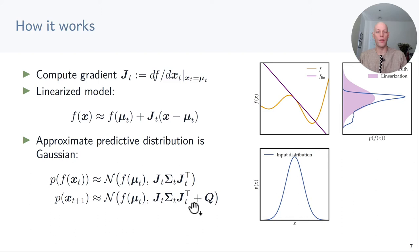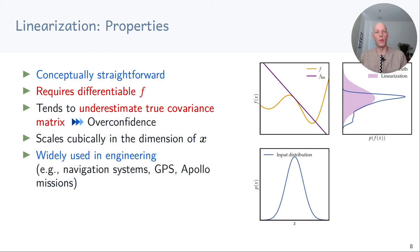Linearization is conceptually straightforward, but it does require a differentiable transition function. An issue in practice is that it often tends to underestimate the true covariance matrix, which can lead to overconfident predictions. Especially in downstream applications this can be a problem if risks cannot be properly taken into account. Compute-wise, this approach scales cubically with the dimension of the state. Although simple, it's used all over the place in engineering — for example in GPS and it helped out in multiple Apollo missions.